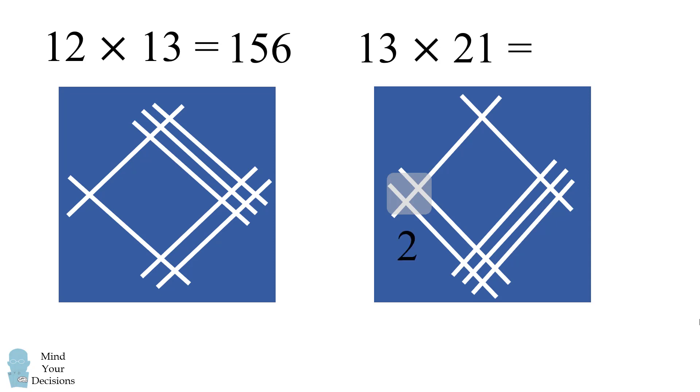Here we have two intersections. Here we have seven intersections and here we have three. So 13 times 21 is equal to 273.